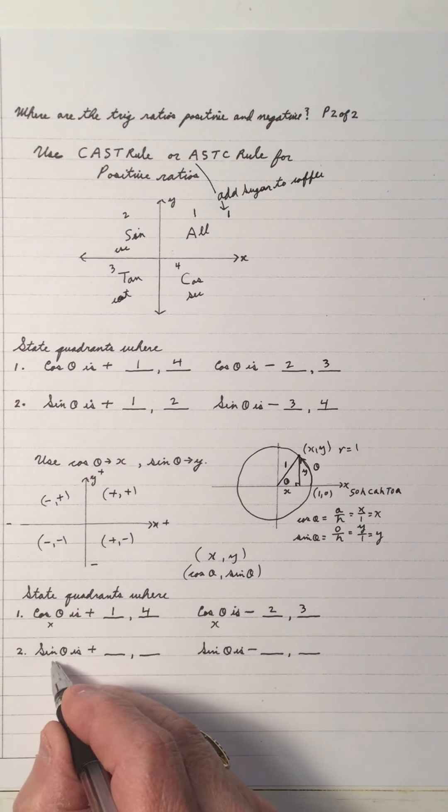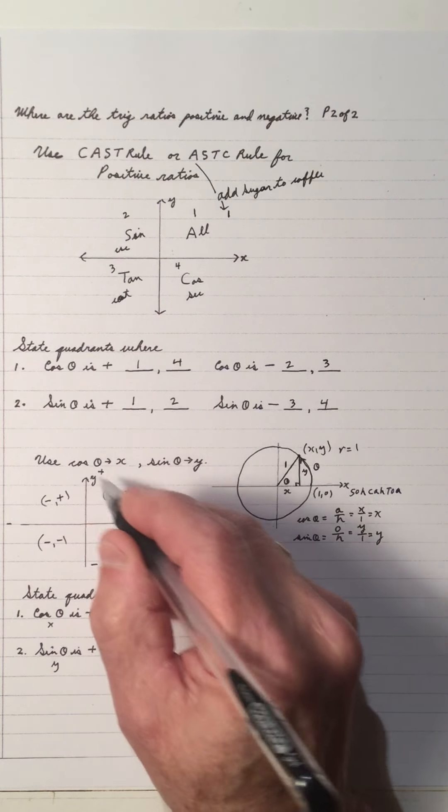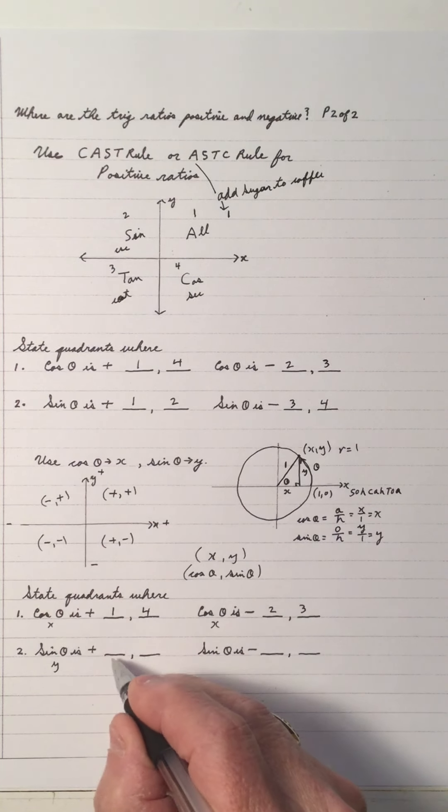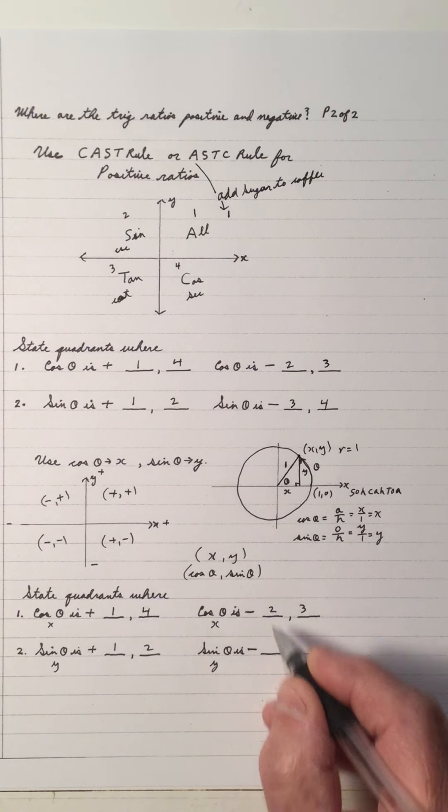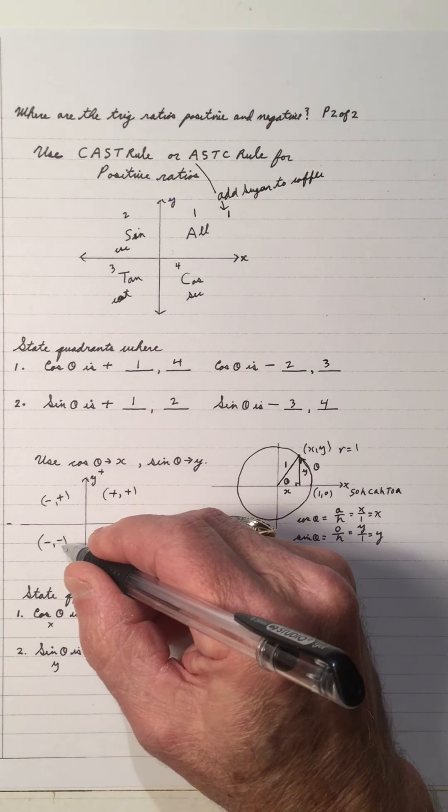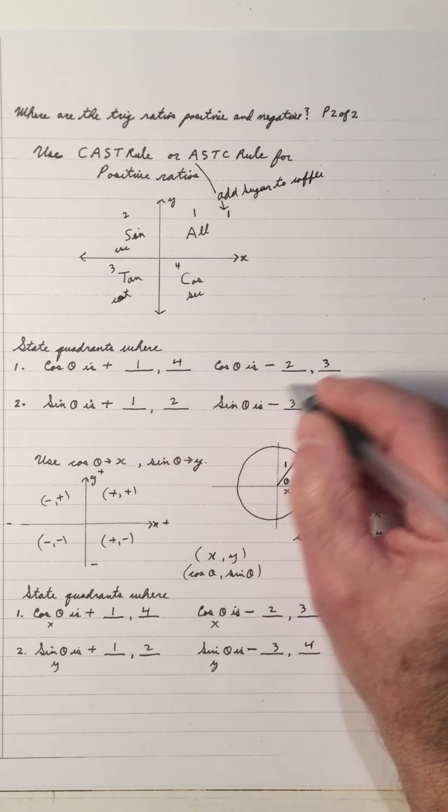So y is positive going up, so that's 1 and 2. And sine is associated with the y, and y is negative, and negative is going down, so it's 3 and 4. You get the same answers as we did up here.